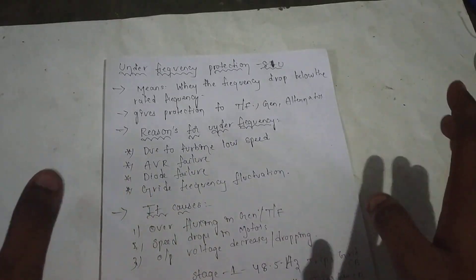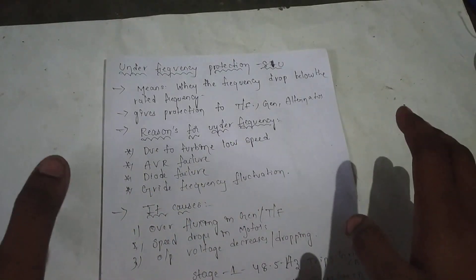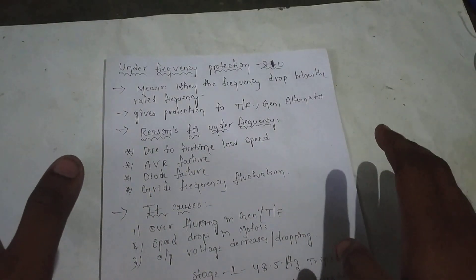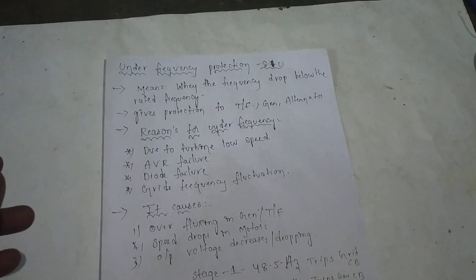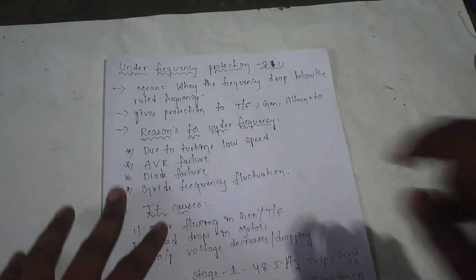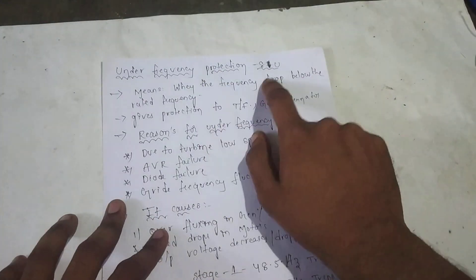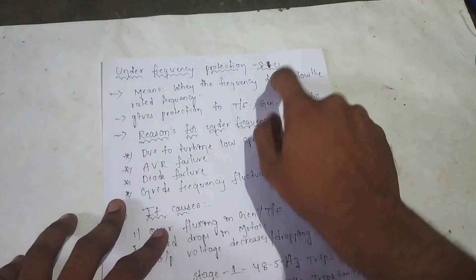Hello Friends, this is the Under Frequency Protection. Under Frequency Protection is called ANSI Code 81O.